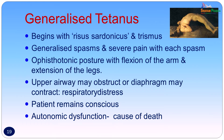Generalized tetanus is usually seen in adults. It begins with risus sardonicus — a sardonic smile — due to spasm of the muscles of the face, trismus, difficulty in swallowing, generalized spasms and severe pain with each spasm, and opisthotonus posture with flexion of the arm and extension of the legs. The upper airway may obstruct or the diaphragm may contract resulting in respiratory distress. The patient remains conscious till the end, and autonomic dysfunction is usually the cause of death due to respiratory failure.